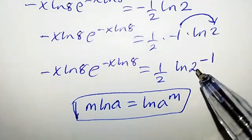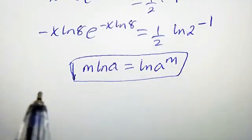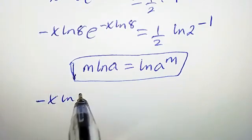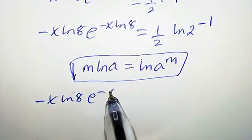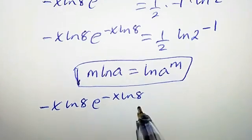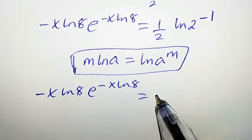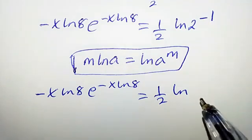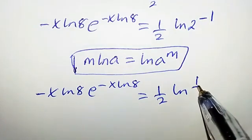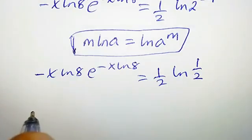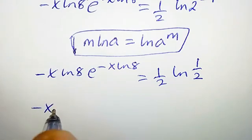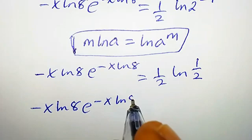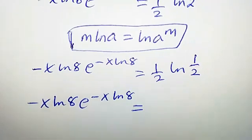Let's proceed further. From this line, we are going to have negative x ln 8 times e to the power of negative x ln 8 equal to half times ln 2 to the power of negative 1, which is the same thing as writing half.